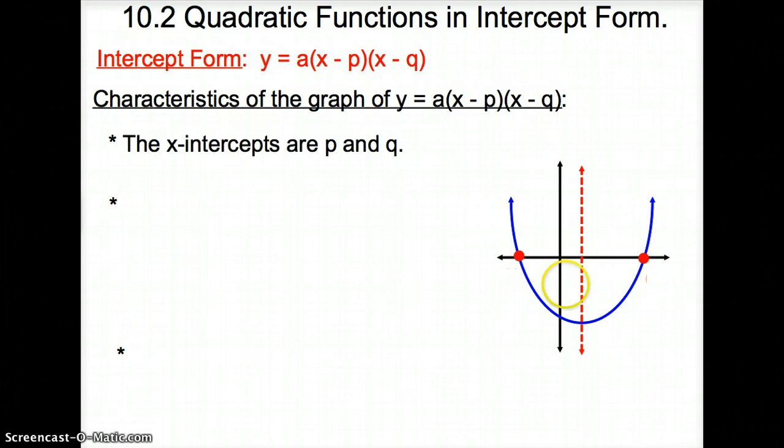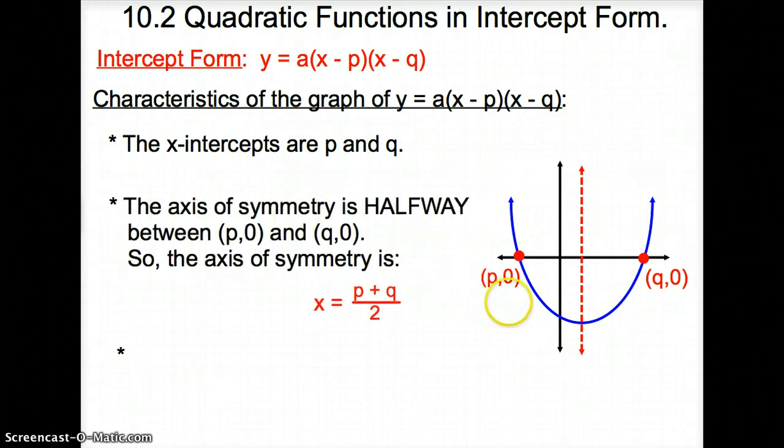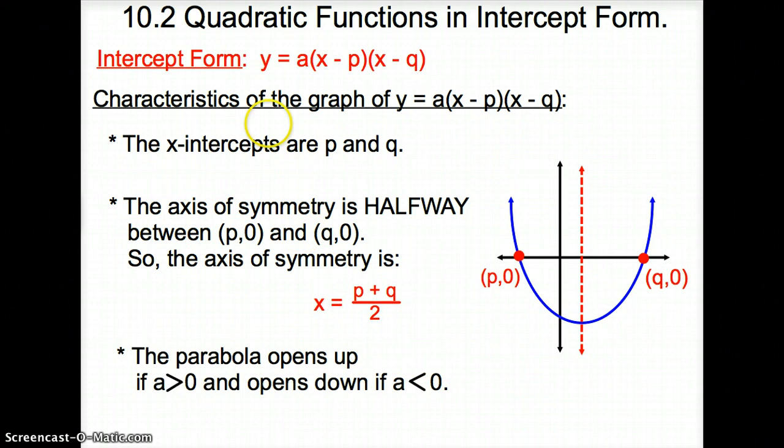Well, first things first, the x-intercepts are a positive p and a positive q. Next, the axis of symmetry is halfway in between p and q, so we add them together, divide by 2 to find our axis of symmetry. And the last, the parabola still opens up if this a is greater than 0, and opens down if this a is less than 0.